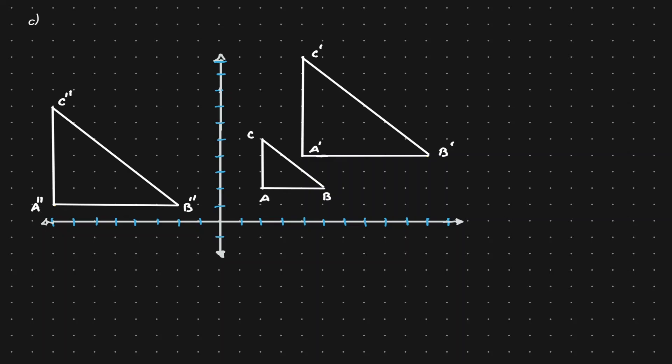By looking at the notation, notice the triangle after the first transformation is this yellow triangle, because if we take a look at the notation, there's one prime on top of those letters. So now we need to think about what was the transformation that occurred such that ABC became A prime B prime C prime.